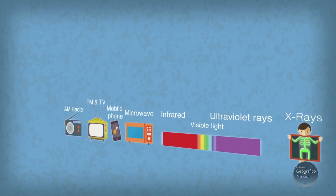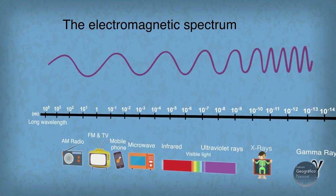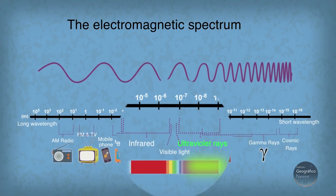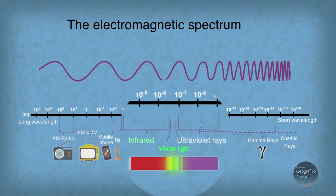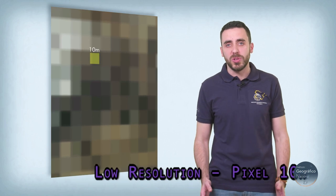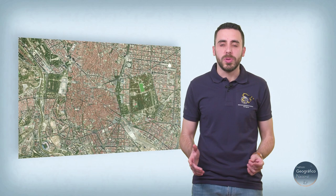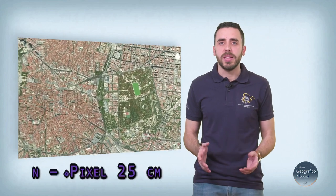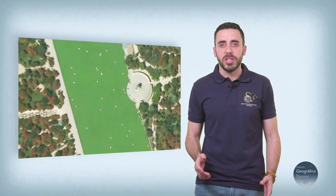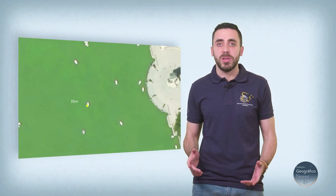Sensors, whether active or passive, are capable of receiving information in different regions of the electromagnetic spectrum, like the ultraviolet, visible, or infrared regions. Moreover, sensors capture images at a certain pixel size or resolution. Low resolution images are used in applications that don't require great detail, such as meteorology. High resolution images provide very detailed information of relatively small elements like buildings, forests, and even cars. That's why these images are used in applications like cartography.